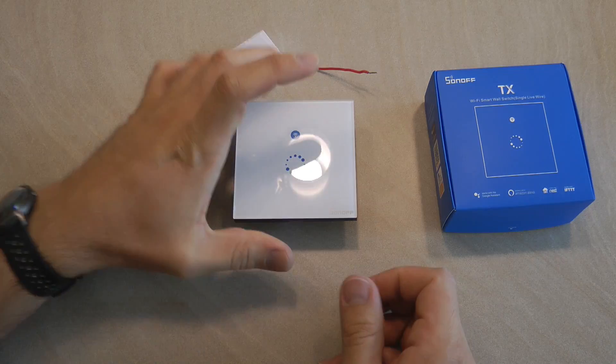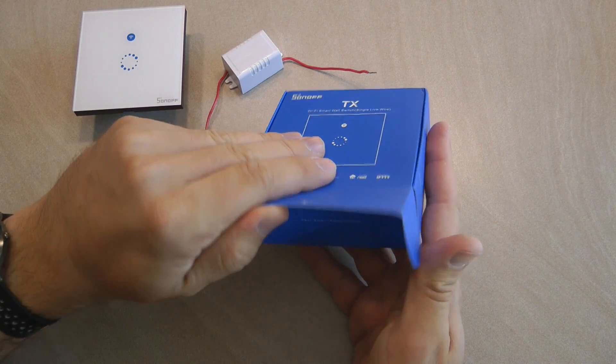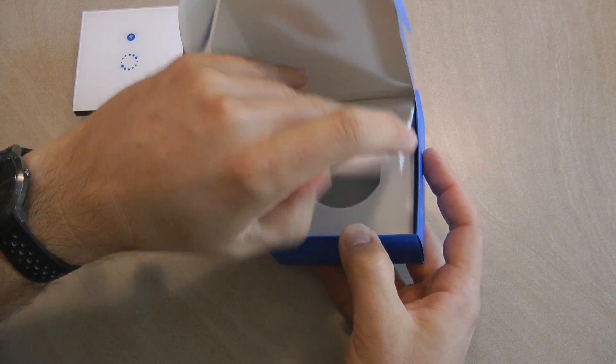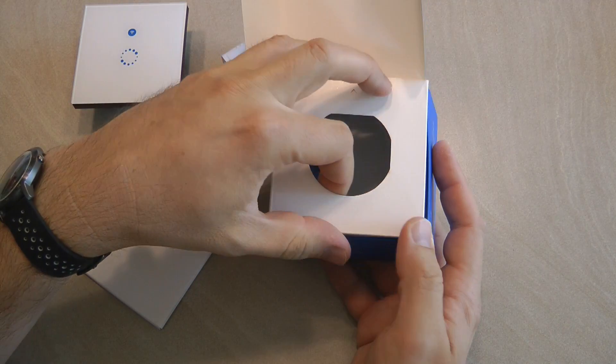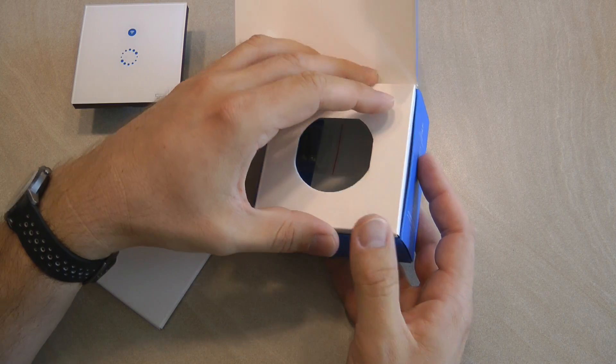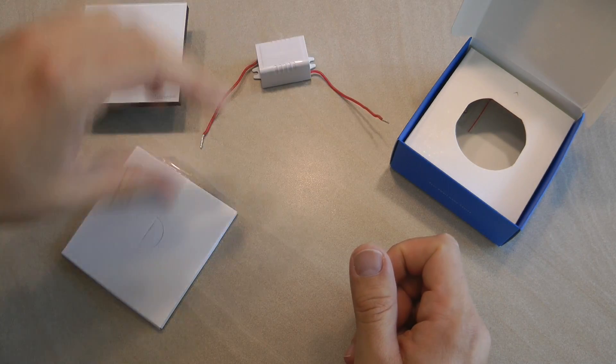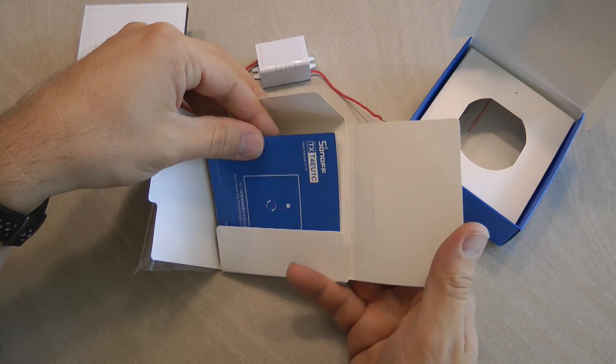Looking at the box, it is the usual TX style of box. The product arrives in this blue box, there is nothing really in here, there's a couple of screws for mounting. As I said, this small unit was also in the box.